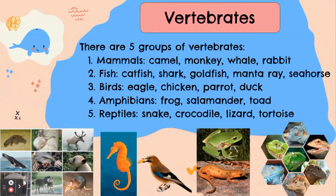Now let's talk about vertebrates. There are five groups of vertebrates. 1. Mammals. The examples of mammals are camel, monkey, whale, and rabbit.